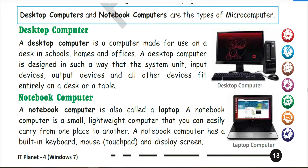Input devices you can see are keyboard and mouse. The system unit is made up of a plastic or metal case. When we talk about the system unit, it contains the motherboard, central processing unit and storage device. In front you have the on-off button, at the back you plug in the keyboard, mouse and other things. So all the things fit entirely on a desk or a table.